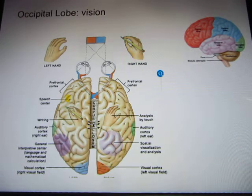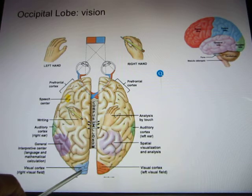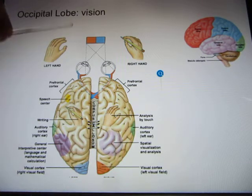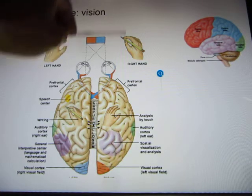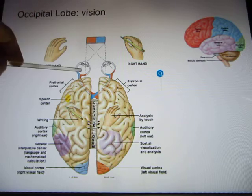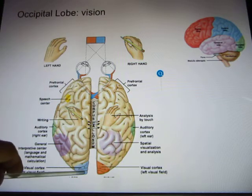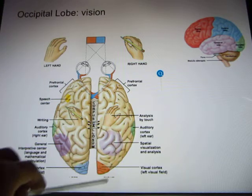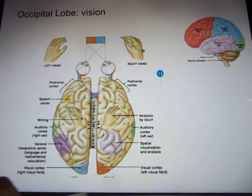Different lobes have different functions. The occipital lobe's main function is visual function — vision. Objects from the outside reach your retina, and from your retina the signal reaches your occipital lobe to be analyzed.